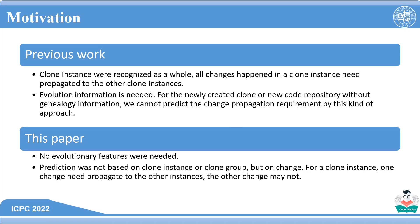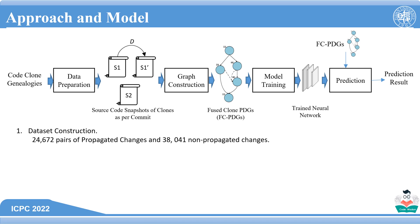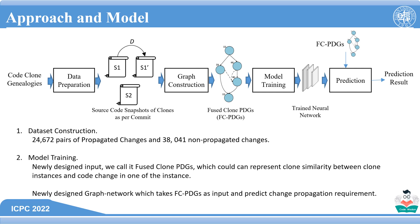No evolutionary features were needed. Prediction was not based on clone instance or clone group, but on change. For a clone instance, one change may need to propagate to other instances while another change may not. We construct a large-scale dataset containing 24,672 pairs of propagated changes and 38,041 non-propagated changes. Then, we propose a new representation of the clone pair along with the change on one of its instances. We call it fused clone program dependency graph, short for FCPDG.